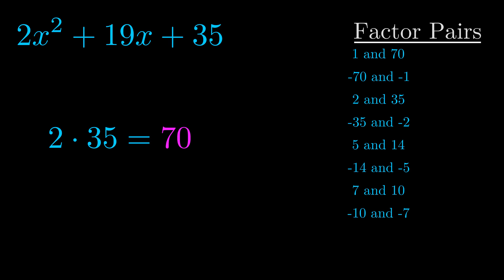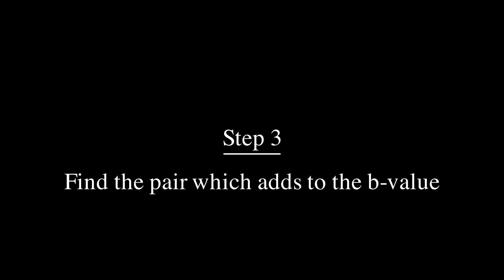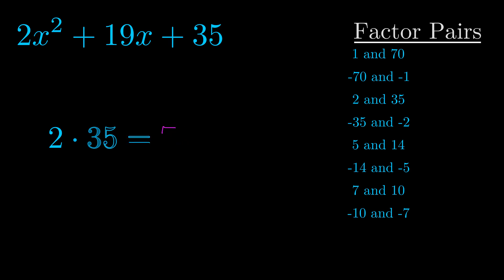Now once you have these factor pairs, the goal is to find which of these pairs adds to the b value. The b value is the coefficient on the x term. That's the middle term, the one that we haven't done anything with yet. And really this is the only factor pair that we need.